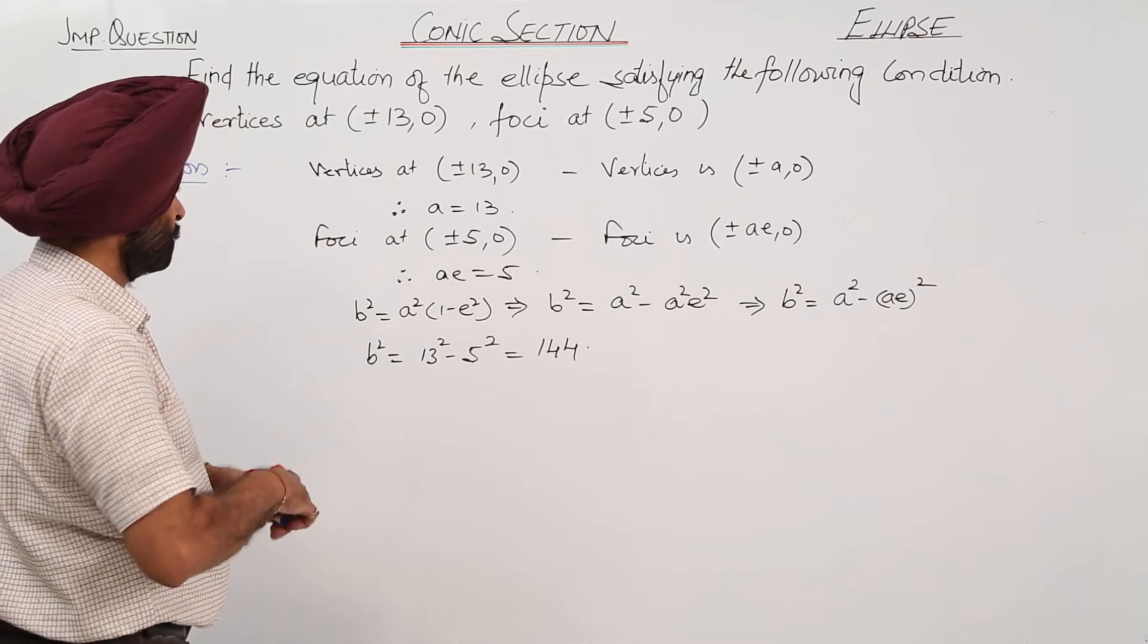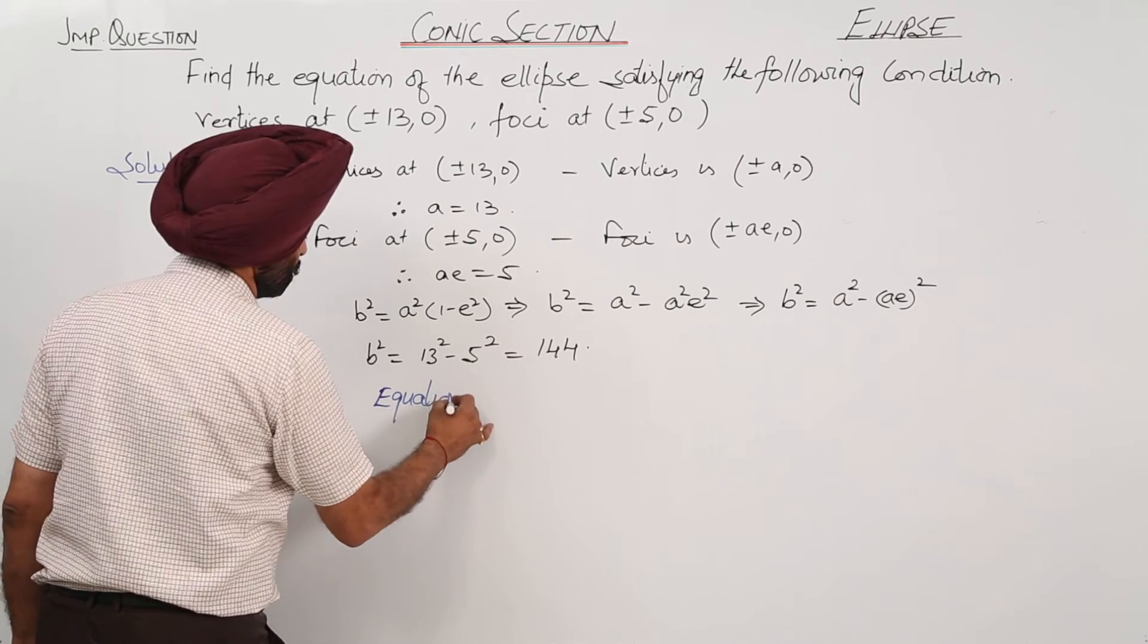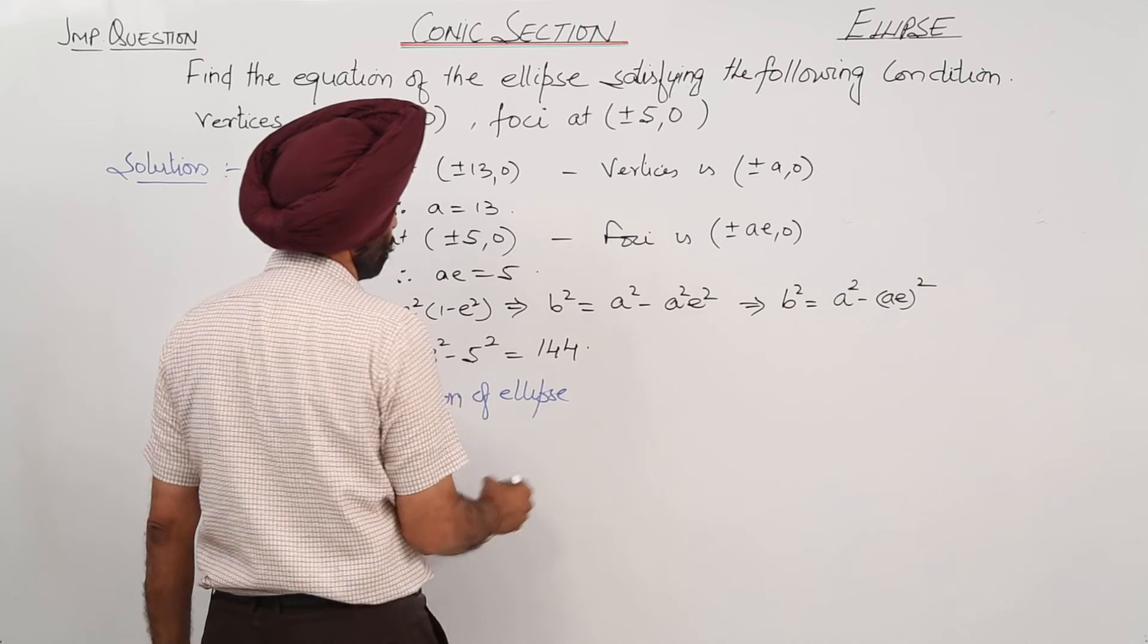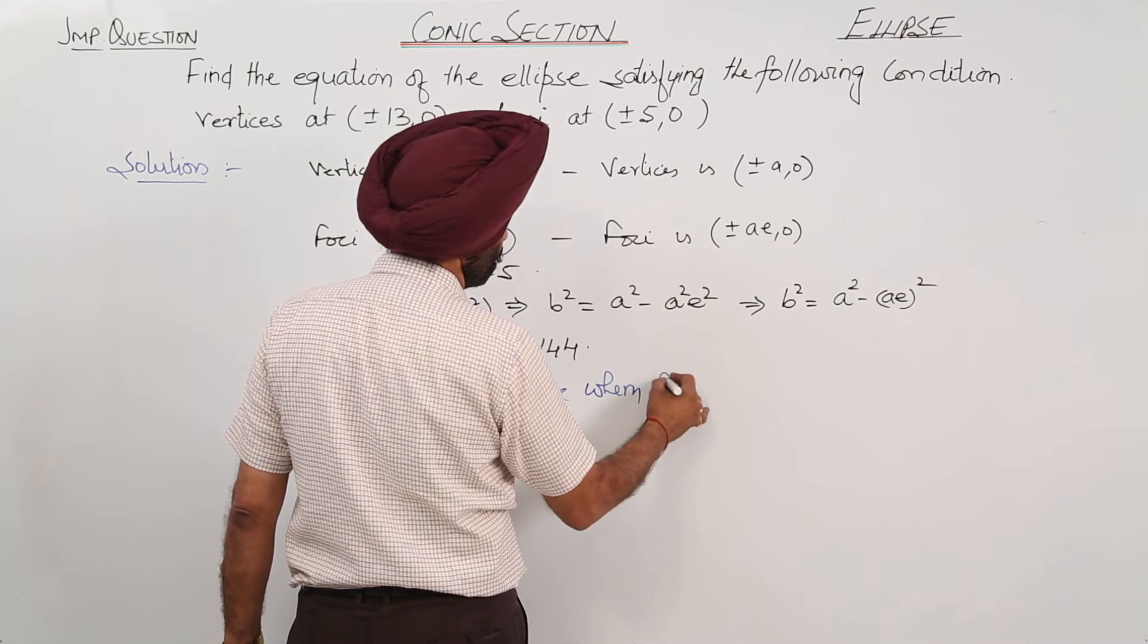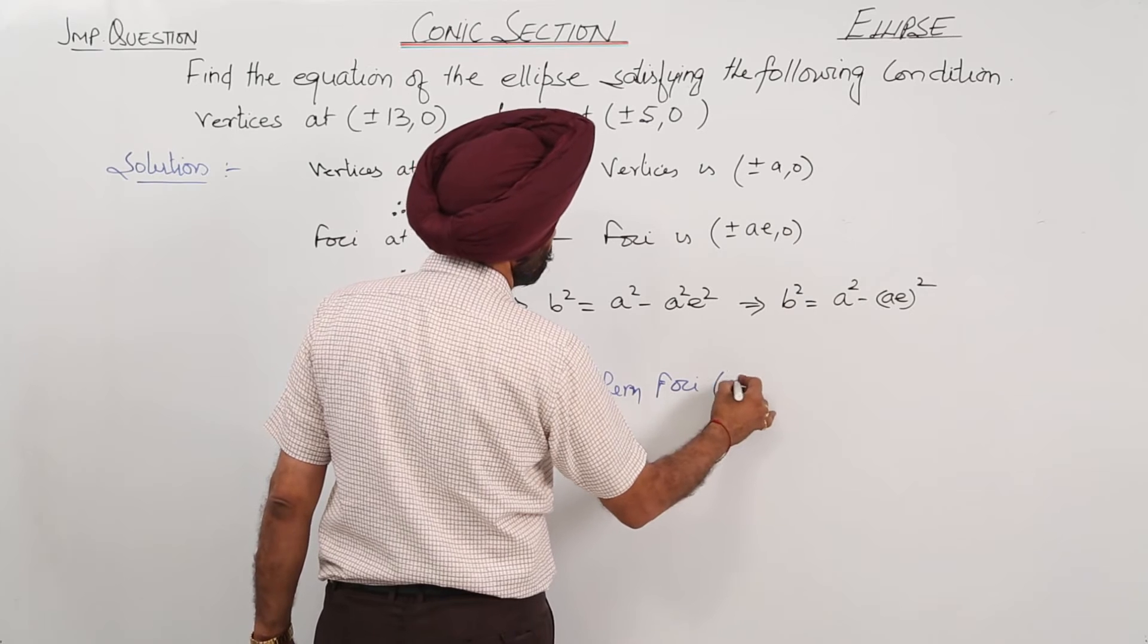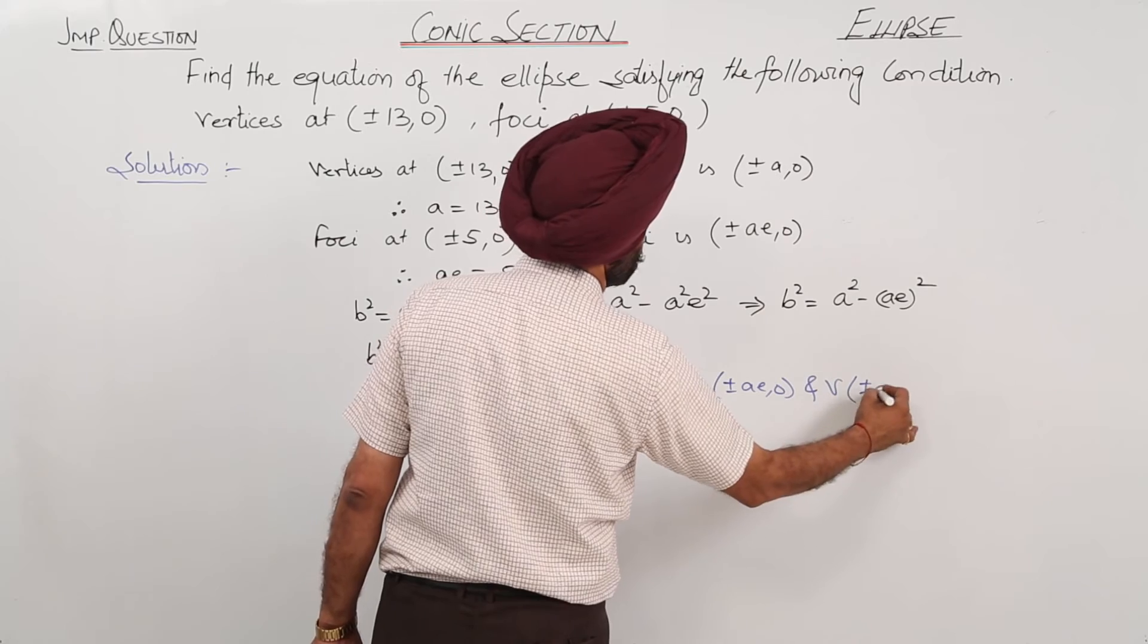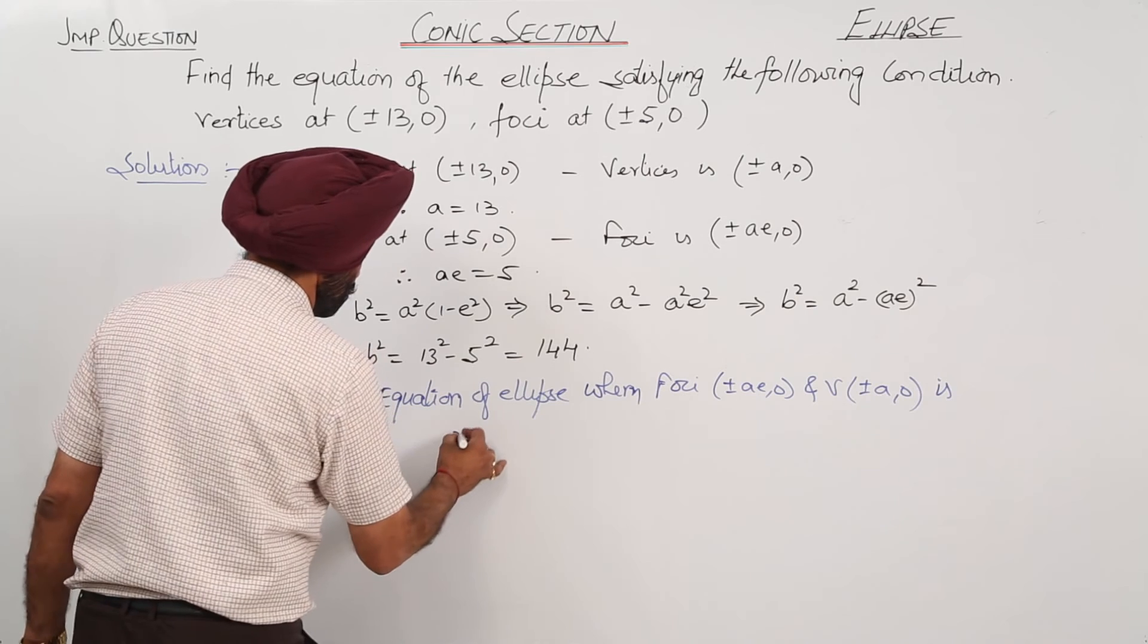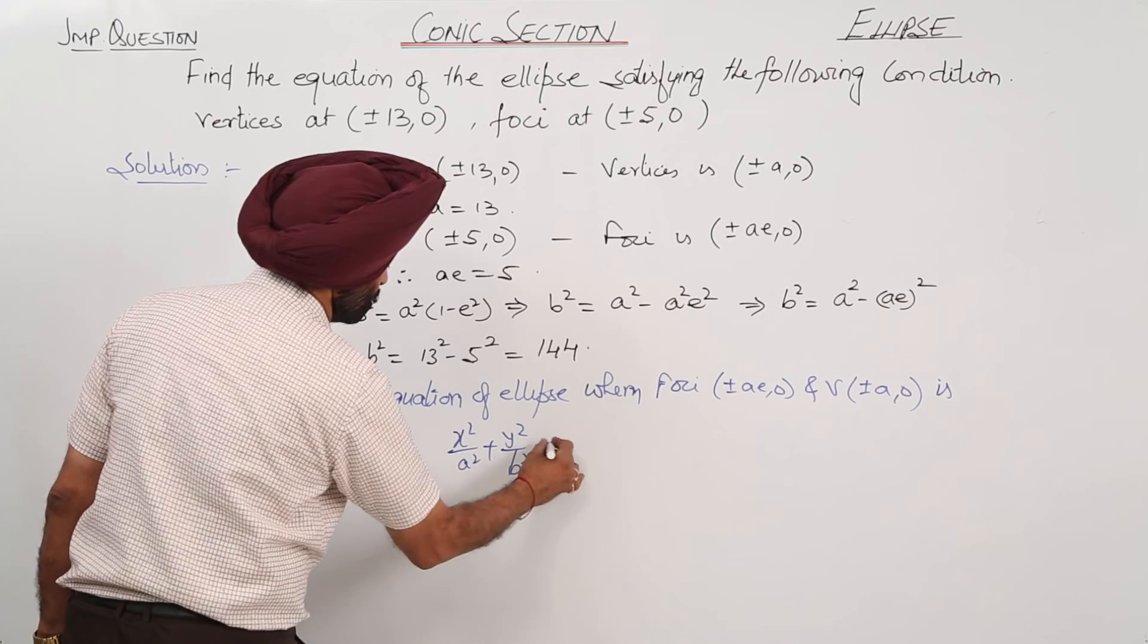Now, equation of ellipse is when foci is plus minus a e comma 0 and vertex is plus minus a comma 0 is x square upon a square plus y square upon b square is equal to 1.